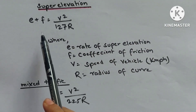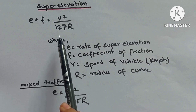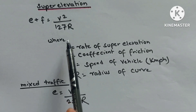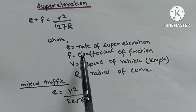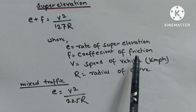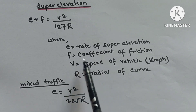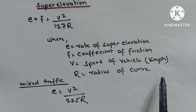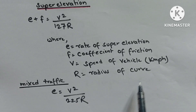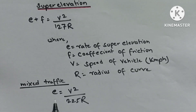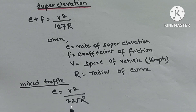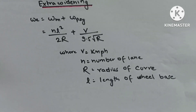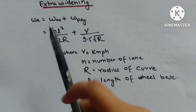Super elevation: e + f = V²/(127R), where e is rate of super elevation, f is coefficient of friction, V is speed in km/h, and R is radius of curve in metres. For mixed traffic, e = V²/(225R).